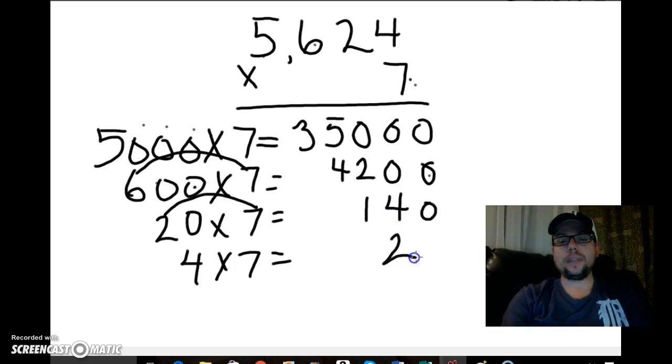And that goes in the tens and ones place there. And now I have all my partial products here: 35,000, 4,200, 140, and 28.